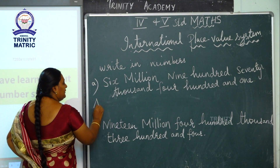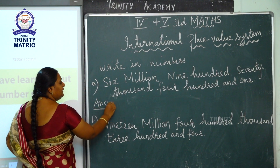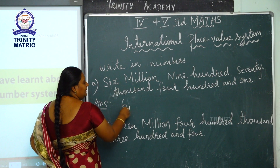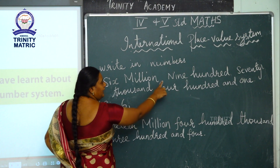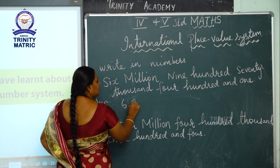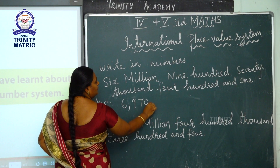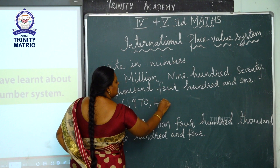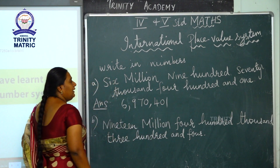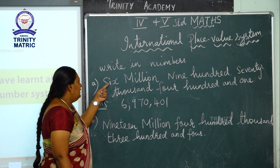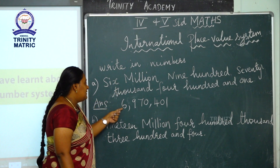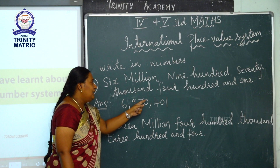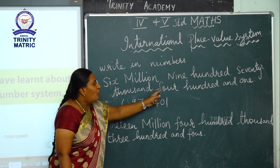So listen carefully. Read the number names carefully. Six million — write 6,000,000 — put comma — 970,000 — put comma — 401. So the number is 6,970,401. Again: read the question — six million, nine hundred seventy thousand, four hundred one. Write: 6 comma 970,000 comma 401.